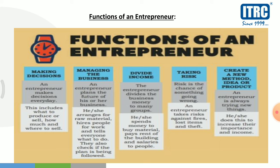Next is create a new method or product — an entrepreneur is always trying new things. जो entrepreneur होता है, वो हमेशा नई चीज़ें try करता है. He or she does this to increase their importance and income — उससे उनकी importance और income दोनों बढ़ते हैं. जैसे एक mobile phone manufacturing company में, एक entrepreneur चाहेगा कि उसका phone unique हो, उसमें unique features और functions हों — तो उससे market में popularity भी होगी और income भी increase होगी. यह कुछ functions थे entrepreneur के.